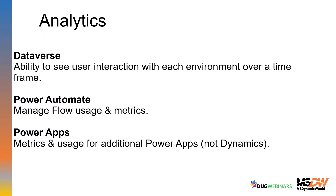Analytics is an important section. This is where you'll see how people are using and interacting with the different pieces of the Power Platform. The Dataverse section shows interactions people are taking over a time frame — are people updating records, creating records, or just logging in? You can look at it over a time frame going back 30 days. You can export this to Excel, which is a great way to gather reporting on who's using the system and how.